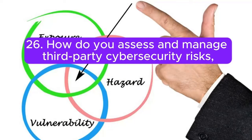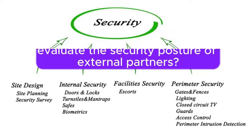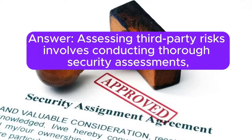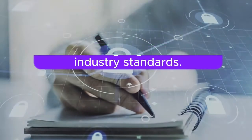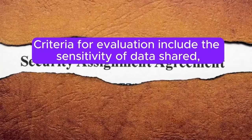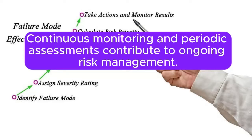Question 26: How do you assess and manage third-party cybersecurity risks, and what criteria do you use to evaluate the security posture of external partners? Answer: Assessing third-party risks involves conducting thorough security assessments, reviewing cybersecurity policies, and ensuring alignment with industry standards. Criteria for evaluation include the sensitivity of data shared, the nature of the partnership, and the third party's track record in cybersecurity. Continuous monitoring and periodic assessments contribute to ongoing risk management.